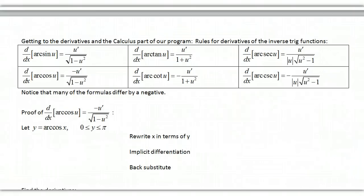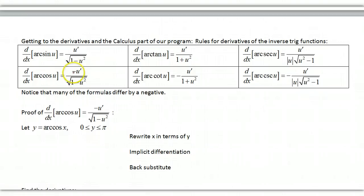Now we're into calculus — the derivative portion. These formulas involve u-prime. The derivative of arc sine is u′ over the square root of 1 minus u². The arc cosine is exactly the same but differs by a negative sign. The arc tangent and arc secant just go the opposite way from each other. In a lot of respects, you just have to remember some of these and the others fall into line.